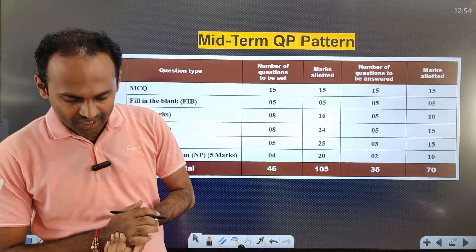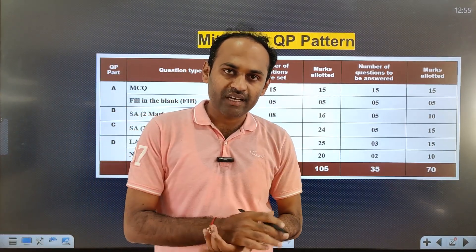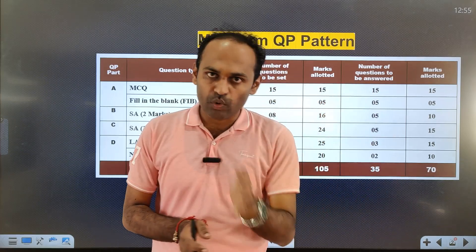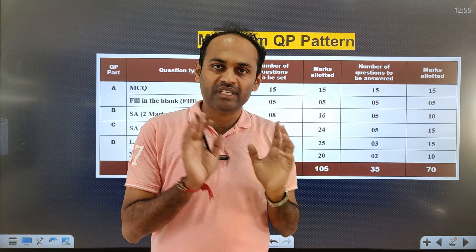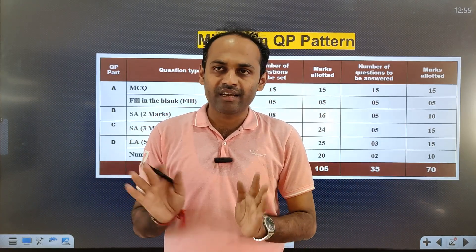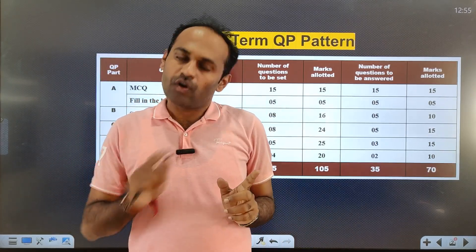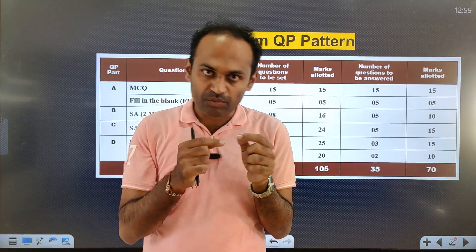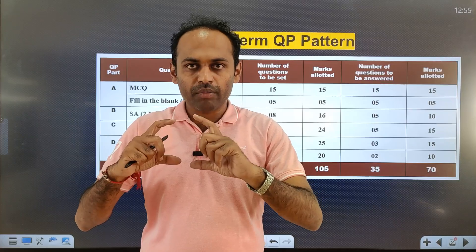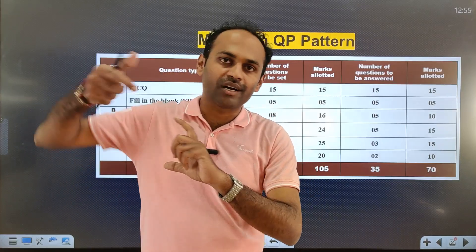Many people are getting confused about the blueprints. Some ask if blueprint 1 is for annual exam 1, blueprint 2 for annual exam 2, and so on — it is not like that. The first blueprint corresponds to the first model paper, second blueprint to the second model paper, and third blueprint to the third model paper. One model paper, one blueprint pattern.